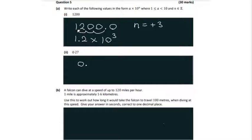This means we will have a negative n value as we are moving the decimal place to the right. So in this case we just have to move it one place over to the right, so we have 2.7 multiplied by 10 to the power of negative 1. So that's part 2.